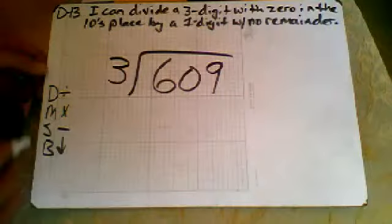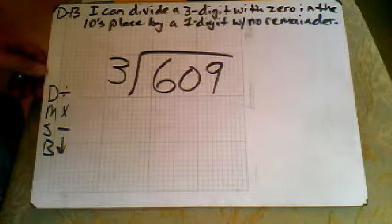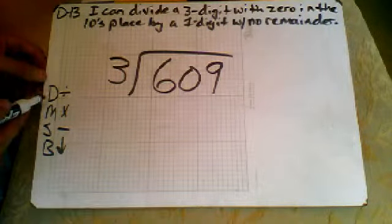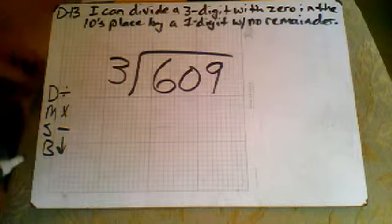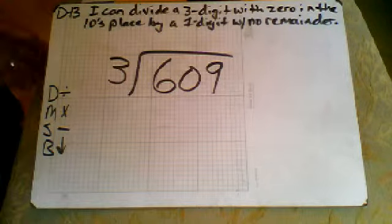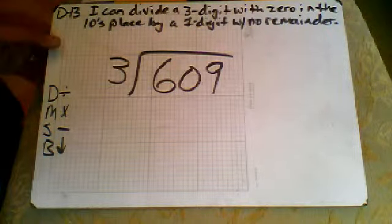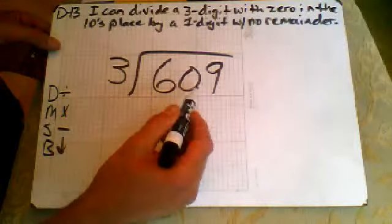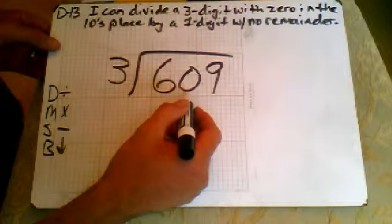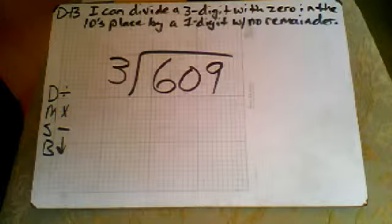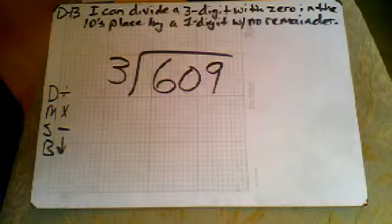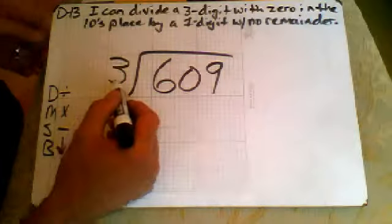Notice I have my multiplication or division steps listed out here, so we have divide, multiply, subtract, and bring down. We can see here that we have a three-digit number with a zero in the tens place divided by a one-digit number. There will be no remainder on these problems.